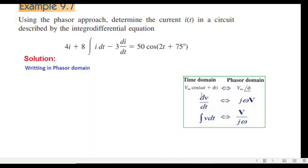Then if we have the derivative, then we write jω of v or i, whatever we have. And similarly, integral of v dt or i dt will be v or i at the top divided by jω. So following this,